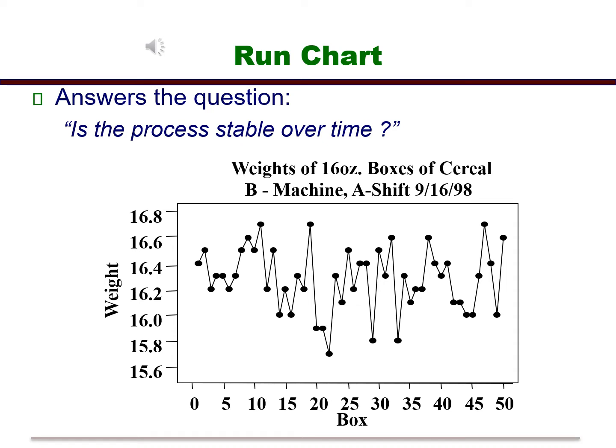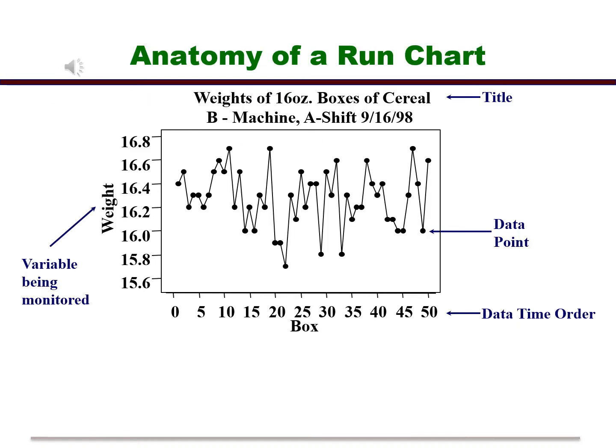Let's first take a closer look. Let's look at the anatomy of a run chart. You always start at the top of the chart where the title is. In this case, the title is the weight of 16-ounce boxes of cereal off the B machine on the A shift. If you look straight down at the bottom, you will see the x-axis or the horizontal axis, which is labeled box, and that's the data in time order.